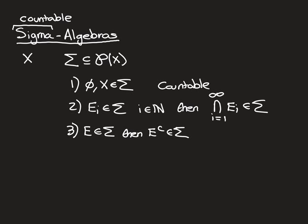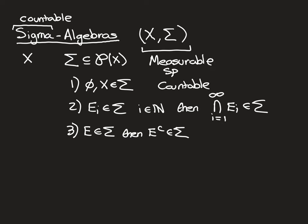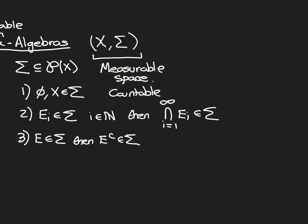So that is the definition of a sigma algebra: the empty set and the whole set have to be in the sigma algebra, it has to be closed under countable intersections, and it has to be closed under complement. If you have such a class of subsets of X, we call that a sigma algebra of X. A hint to where we're going: the pair of a set equipped with a sigma algebra over it — i.e., a sigma algebra of subsets of it — this structure is called a measurable space. It's going to be very important in measure theory. We're going to equip this with further structure and it will then turn into a measure space.